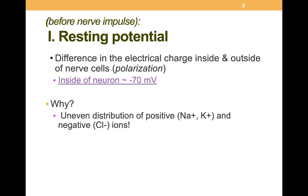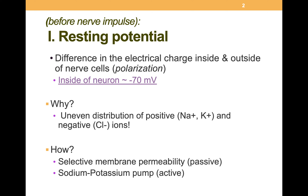Why is there this resting potential — this difference in electrical charge between the inside and outside of the cell? Well, there's an uneven distribution of positive and negative ions. Positive ions are sodium and potassium, and negative ions are chloride as well as large proteins inside the cell that are also negatively charged. So that creates this difference in charge.